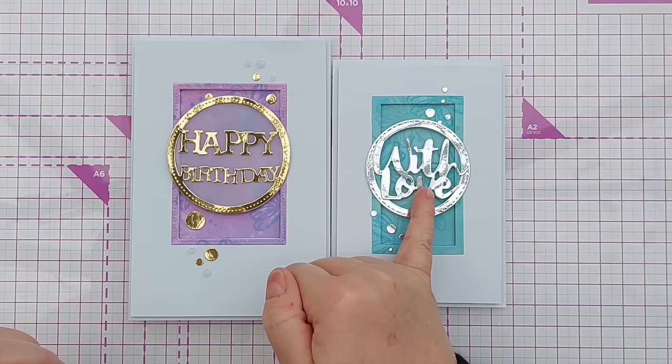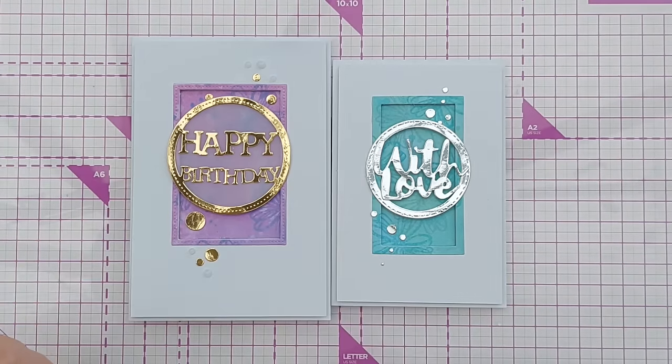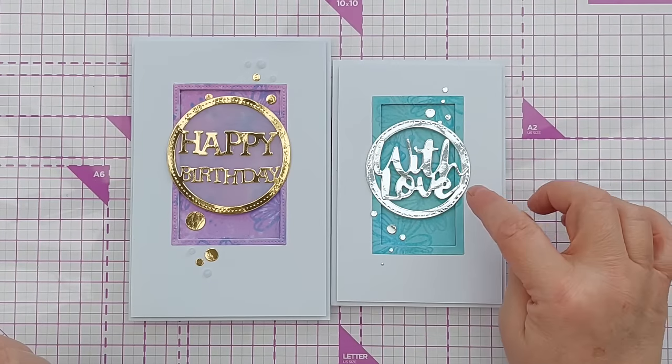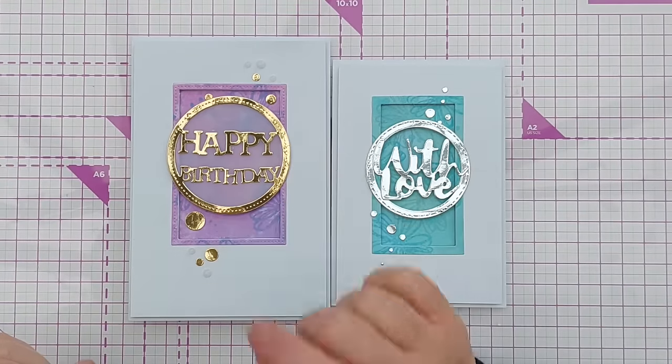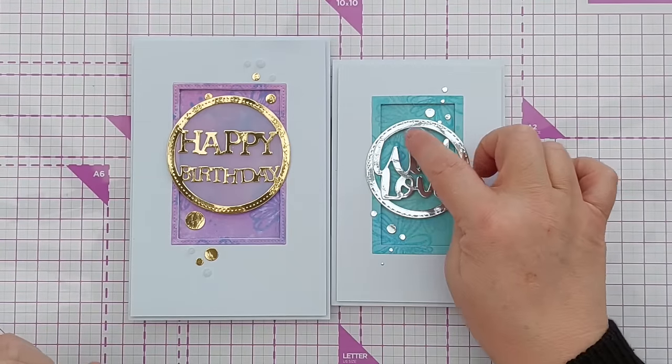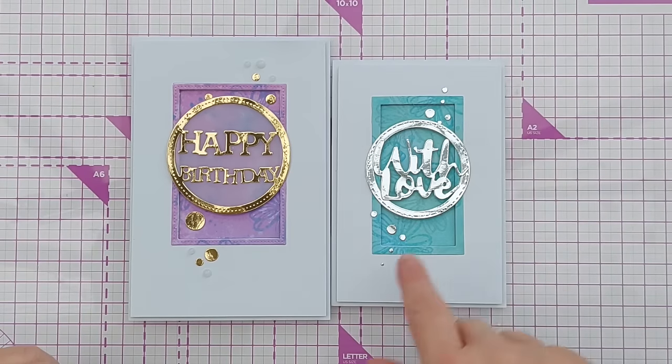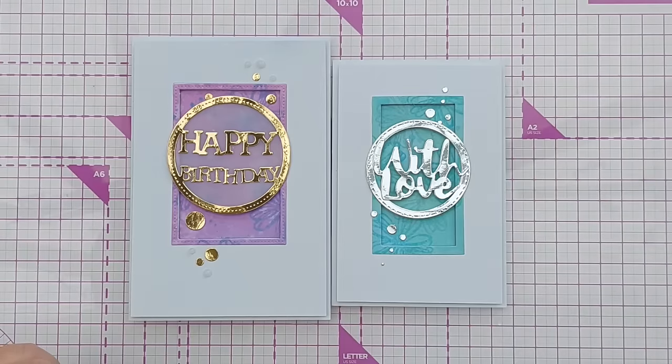I didn't back this one with vellum. This one here I put vellum behind it, and I think I prefer this one without vellum. I think because it's silver it might not stand out so well on the vellum, but with this blue background it stands out quite well. So I'm quite happy with that, and I decided not to put the Nuvo Drops on—I think it's enough as it is.